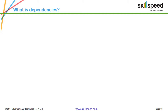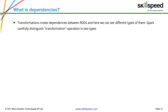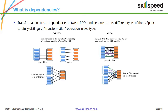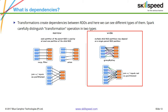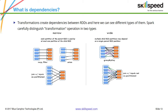What exactly are dependencies? Transformations create dependencies between RDDs. Basically, dependencies means the transformations and resulting RDDs will be dependent on the parent RDDs. You can divide transformations into two types: narrow transformations and wide transformations. To give an example, let's take map or filter. Let's say you are applying a map operation — you can look at the example displayed in the slide.